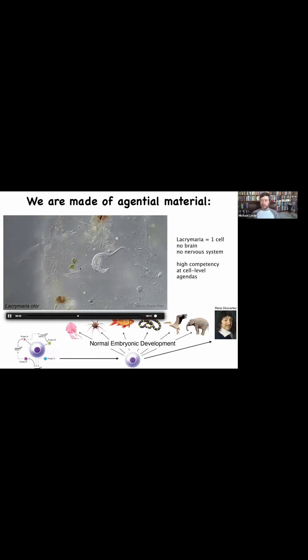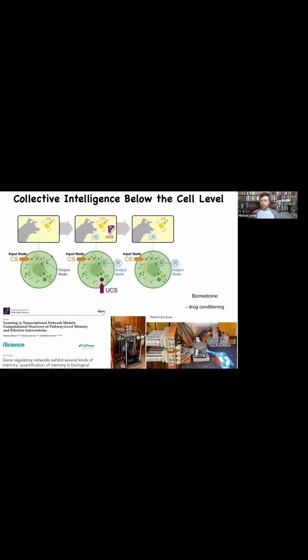And in fact, even below the single cell level, the molecular pathways within single cells already have learning capacity. The different signaling pathways and gene regulatory network components come together into a collective intelligence that is able to form six different kinds of memories, including Pavlovian conditioning.